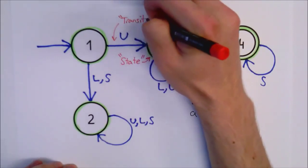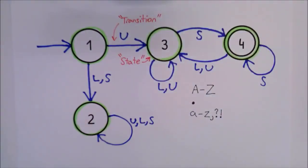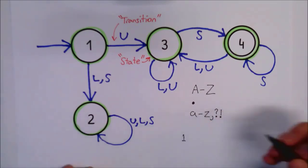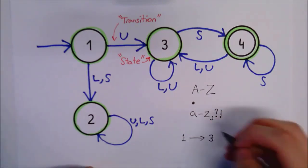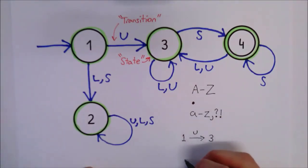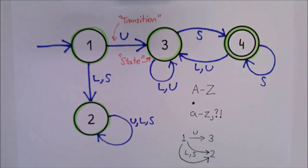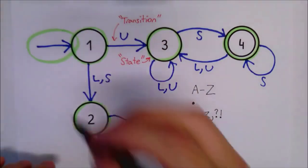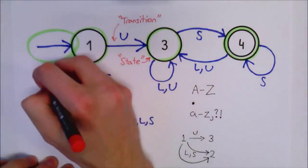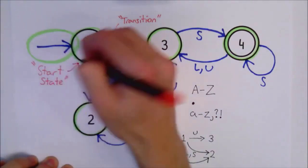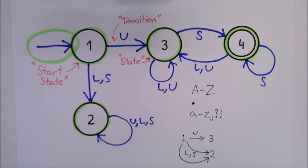These represent transitions from one state to the next. For example, if we are at state 1, then the U arrow will transition us, or move us, to state 3, while the LS arrow would transition us to state 2. Here, LS just means that both L and S result in the same transition. Now note that the arrow on the far left is not labeled and does not transition between states, instead only entering state 1. This tells us that state 1 is the start state. So whenever we run through this automaton, we always start from here.